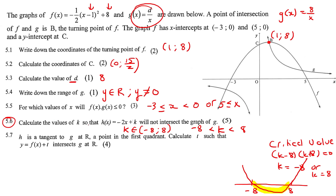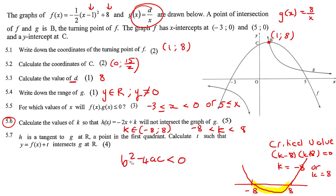To summarise: they said the graphs must not intersect, so we pretended they do intersect by making them equal, forming a quadratic. We then told that equation it must have no answers, because if it has answers the graphs intersect, and if it doesn't they don't. To force no real solutions, the discriminant must be smaller than zero.